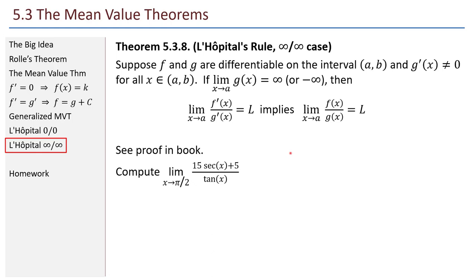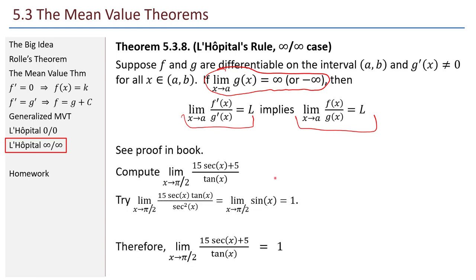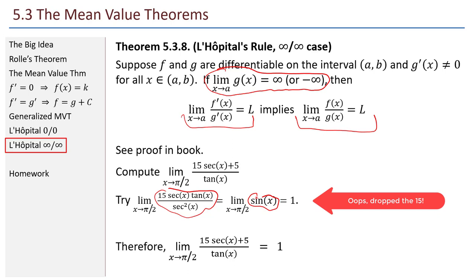There's one last case of L'Hôpital's rule: the infinity-over-infinity case. The only difference is that the limit in the denominator is infinity or negative infinity. As a quick example, the limit as x goes to π/2 of a quotient where tan(x) goes to positive infinity: taking derivatives of top and bottom gives an expression with trig functions that all simplify to sin(x), giving a limit of 1.